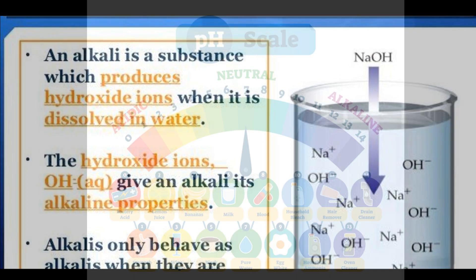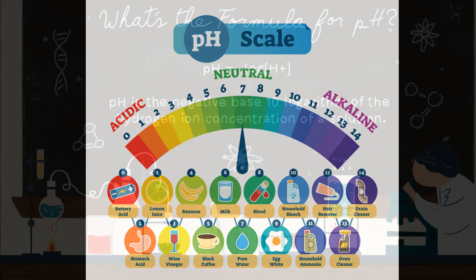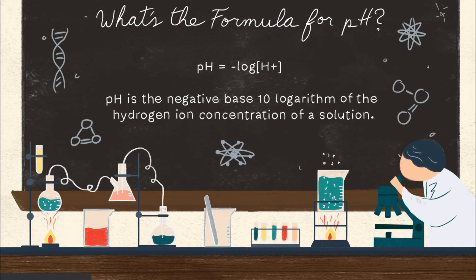Alkaline substances are compounds that have a pH value higher than 7 on the pH scale. Now, you might be wondering, what's pH?